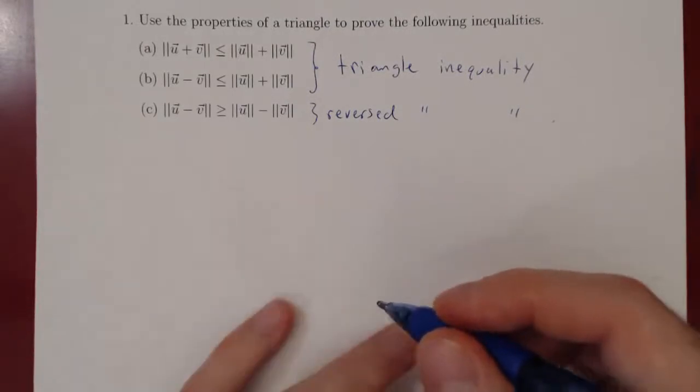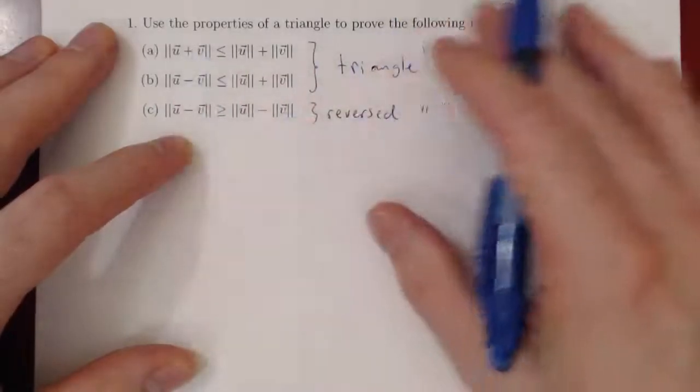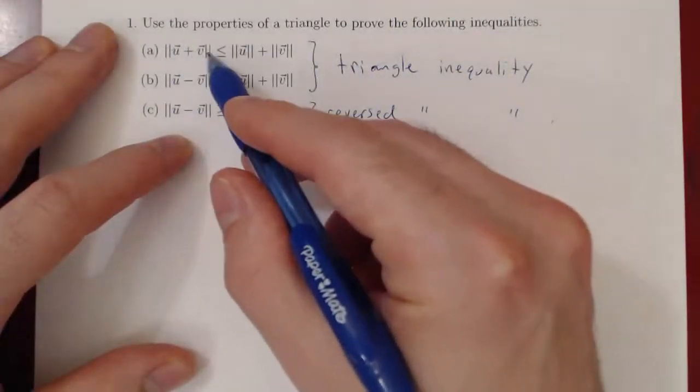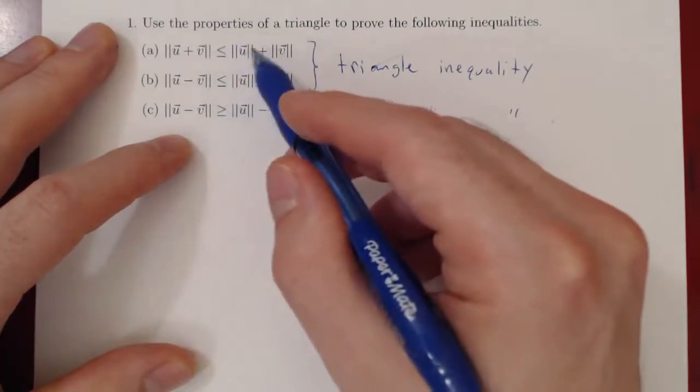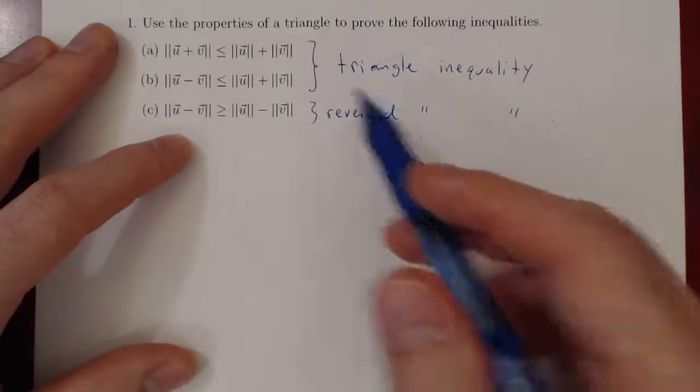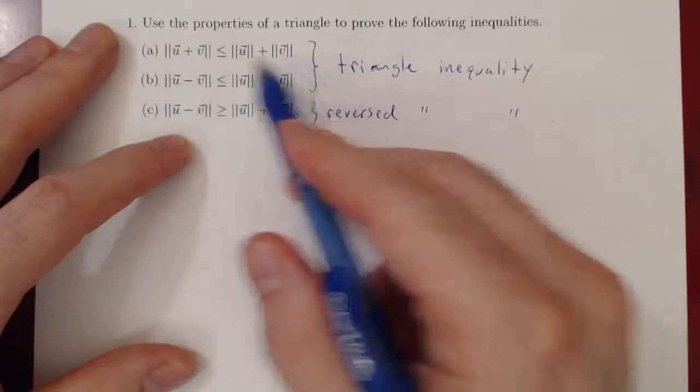So look at the first one, what does it say? It says suppose you have two vectors u and v. Well, the norm of u plus v will be at most the norm of u plus the norm of v. And the question says to use properties of a triangle to prove the following inequalities.